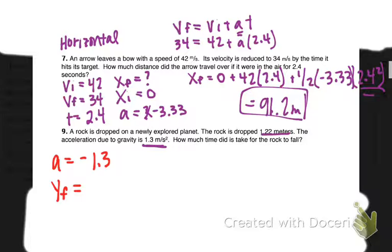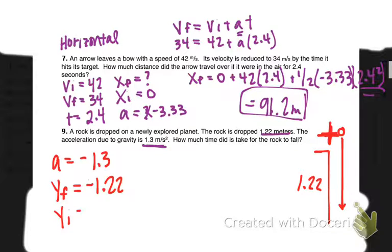My yf is, I like to make it negative 1.22 meters because I'm going to end up 1.22 meters below where I started. Here's where my object started, here's my rock, it fell a distance of 1.22 meters. I like my origin to be here, so my initial displacement is zero, my final displacement is 1.22 meters below where I started. My initial velocity has to be zero since it says it was dropped, and then I'm going to solve for time.